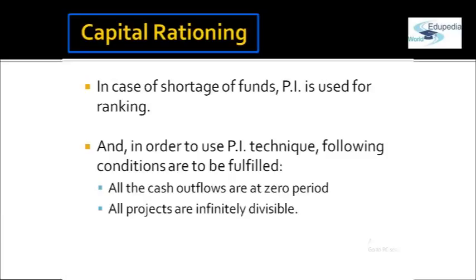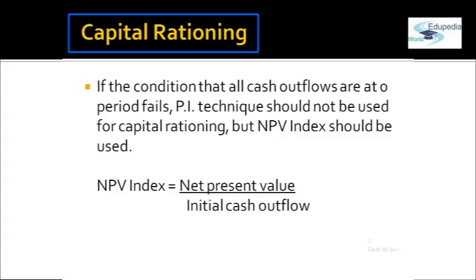For using the PI technique to rank those projects, two conditions must both be fulfilled. If one condition is not fulfilled, the PI technique cannot be used for ranking. The two conditions are: first, the capital outflow is at zero period; and second, whatever projects are in the option, they are infinitely divisible — that is, they can be accepted in parts. But if the first condition is not met — if the capital outflow is not at zero period — we cannot use PI. Instead, NPV index has to be computed, which is net present value divided by the initial cash outflow. After computing the NPV index, ranking could be done.